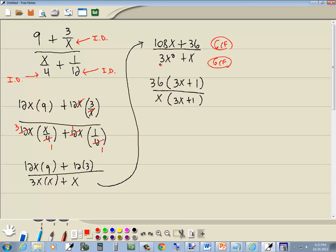Well, after you factor the top, you factor the bottom, then you cancel, if you can. They both have a 3x plus 1, so 3x plus 1 is going to cancel, and our answer is 36 over x.